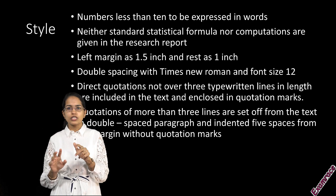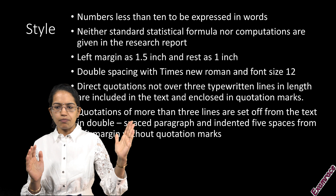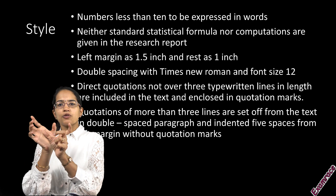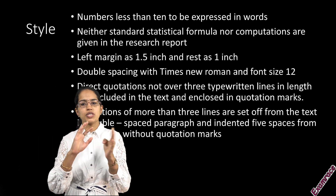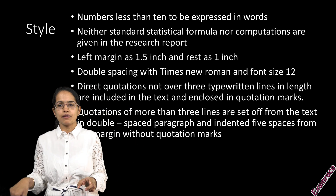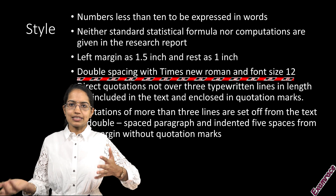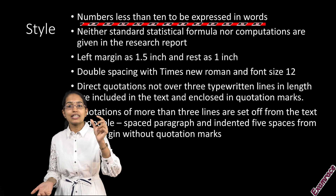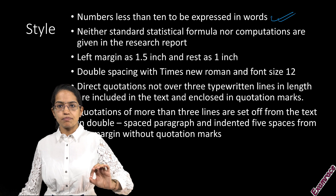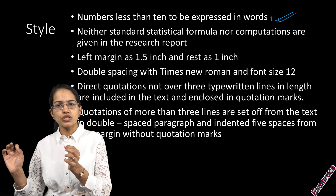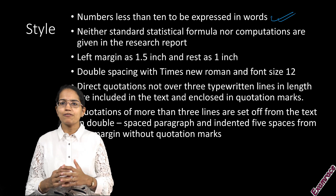If you have a quote or something more than three lines, you would double space it and place it in the center with five spaces indented from the left margin to highlight it. However, if it's less than three lines, you include it in the text itself. The left margin is 1.5 inches and the remaining margins are one inch. Double spacing with New Times Roman size 12 is the standard format. Numbers less than 10 are written in words — this is a very important point you should not miss.